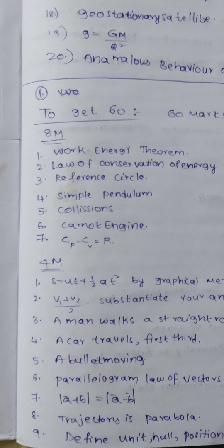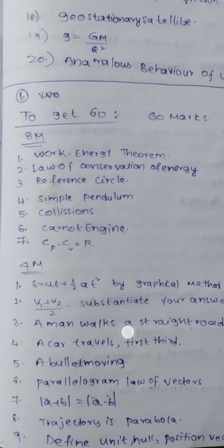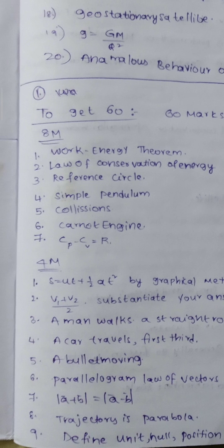For the 8-mark section, there are 8 questions. The first question involves the equation S = ut + ½at². Next, E = ut/2, where you substitute your answer. Then, a man walks on a straight road, and a car travels the first third, that is x/18. Next, a bullet moving with U² − u² = S. These 5 questions are from motion in a straight line and are confirmed.